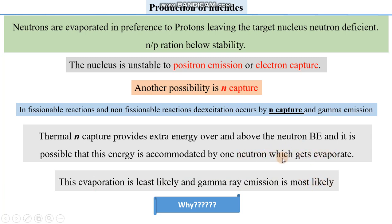Evaporation is least likely because the nucleus will still remain neutron deficient if a thermal neutron is captured while another neutron is evaporated — there will be no net change and the instability will remain. Therefore, this is not the favourable process for the nucleus. Gamma ray emission is the most favourable process, as no change in atomic number or atomic mass occurs with gamma emission.